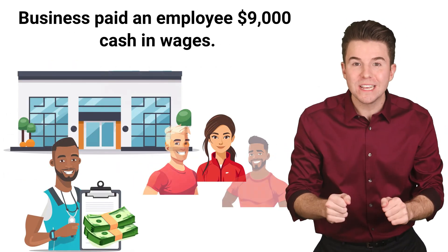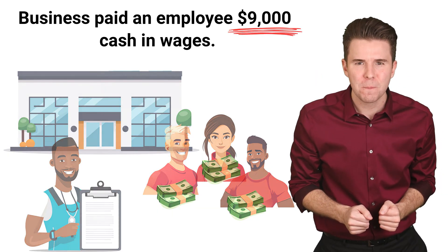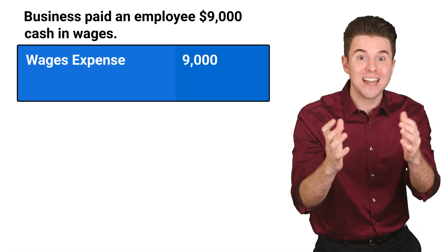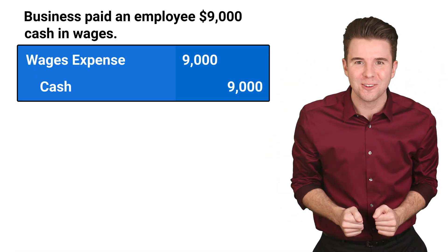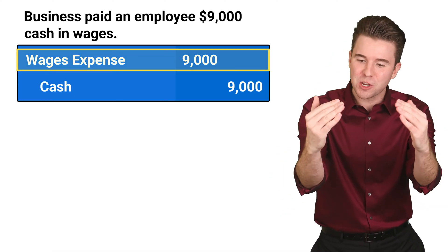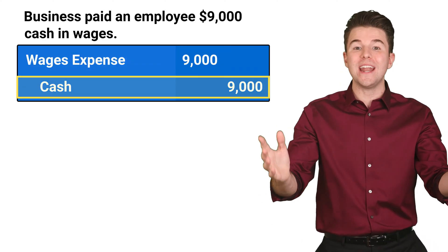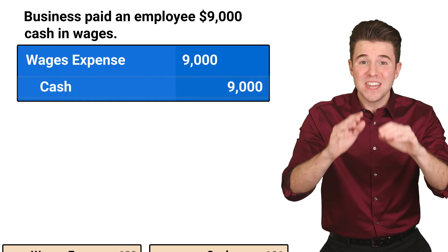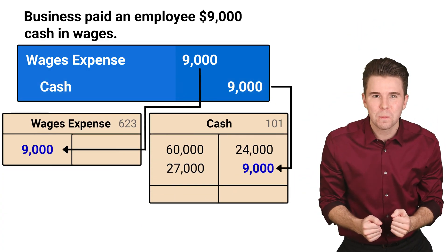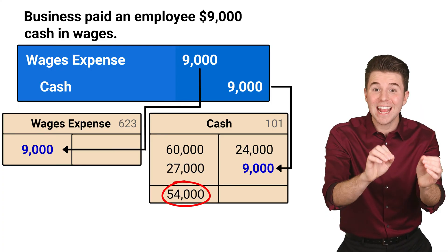Next, we pay our employees who have now earned $9,000 of wages. To record this entry, we debit wages expense for $9,000 and credit cash for $9,000. We debit wages expense because debits increase expense accounts. We credit cash because credits decrease asset accounts. The $9,000 is then posted to the ledger accounts. See that the credit reduces the balance in the cash account.